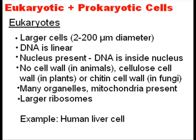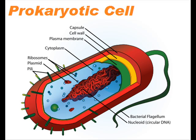Eukaryotes however are larger cells — two to two hundred micrometers in diameter. Their DNA is linear. They have a nucleus present, with the DNA inside the nucleus. They have no cell wall in animals, a cellulose cell wall in plants, or a chitin cell wall in fungi. They have many organelles and mitochondria present, and larger ribosomes. An example of a eukaryote would be a human liver cell. Prokaryotes like bacteria are roughly a tenth the size of eukaryotic cells, which means that normal microscopes aren't really powerful enough to look at their internal structure.